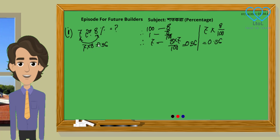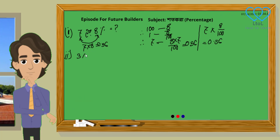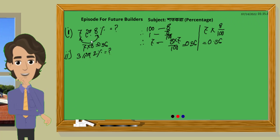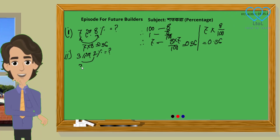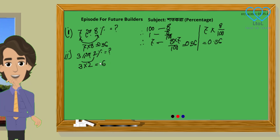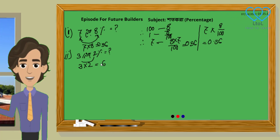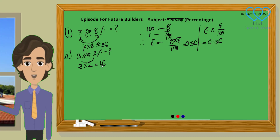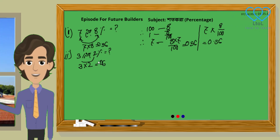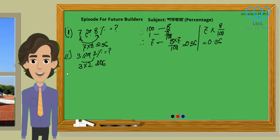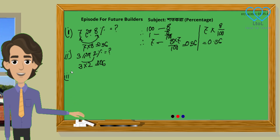Our percent will be 0.56. We have to multiply two numbers — 3 and 2 percent. From that, we take 3 times 2 equals 6, and we place the decimal after two digits.